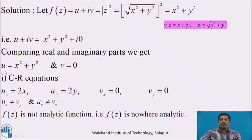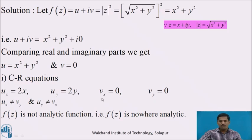To check analyticity, we use the sufficient condition. Differentiating u partially with respect to x, treating y constant: ux = 2x. Differentiating u partially with respect to y, treating x constant: uy = 2y. Since v = 0, both vx and vy are 0. We can see that ux = 2x and vy = 0, and uy = 2y and vx = 0 — they are not equal, so the Cauchy-Riemann equations are not satisfied.